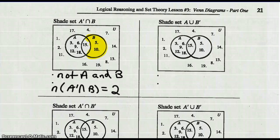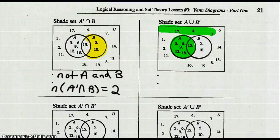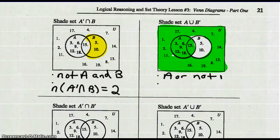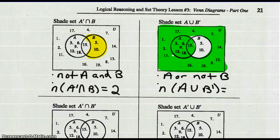Shade the set A union not B — A union not B. So everything in A — I'm going to shade A — or everything not in B, so that's all the stuff that's not in circle B, and all that stuff gets shaded. That's what it should look like. What is that? A or not B — A union B prime, A or not B. And the number of elements in A union not B: it's everything but two, so 19 less two is 17.